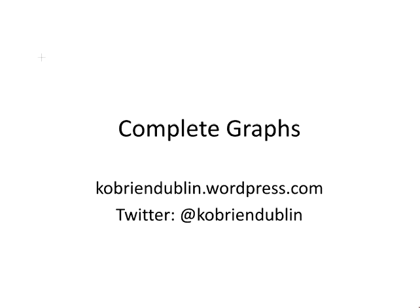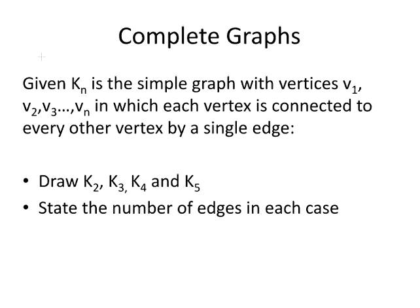In this presentation, we look at a special type of graph known as a complete graph. So what is a complete graph? Well, let's look at an example. Given Kn, which is the simple graph with vertices V1, V2 to Vn, in which each vertex is connected to every other vertex by a single edge.